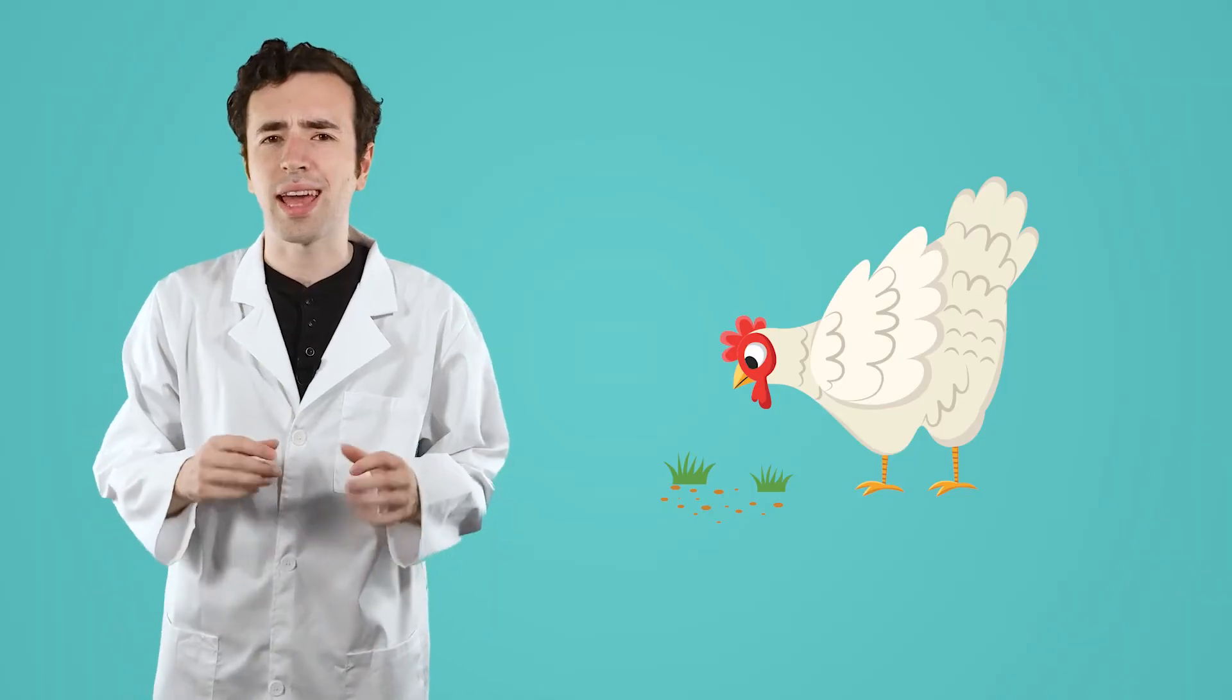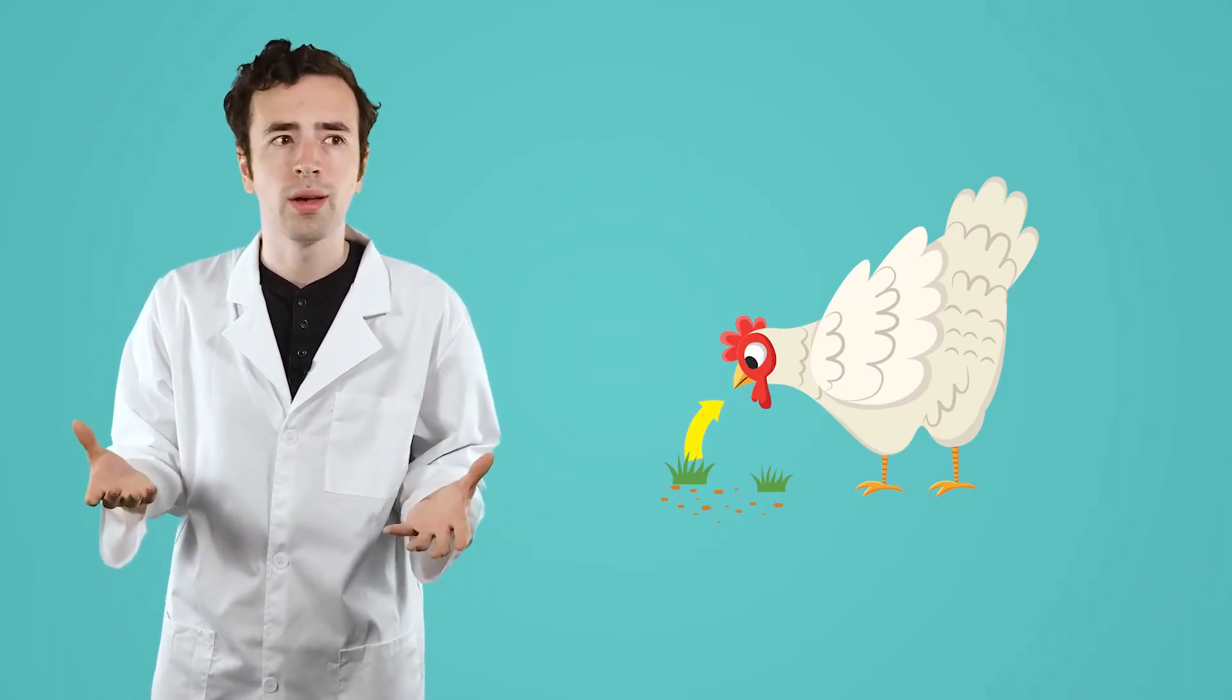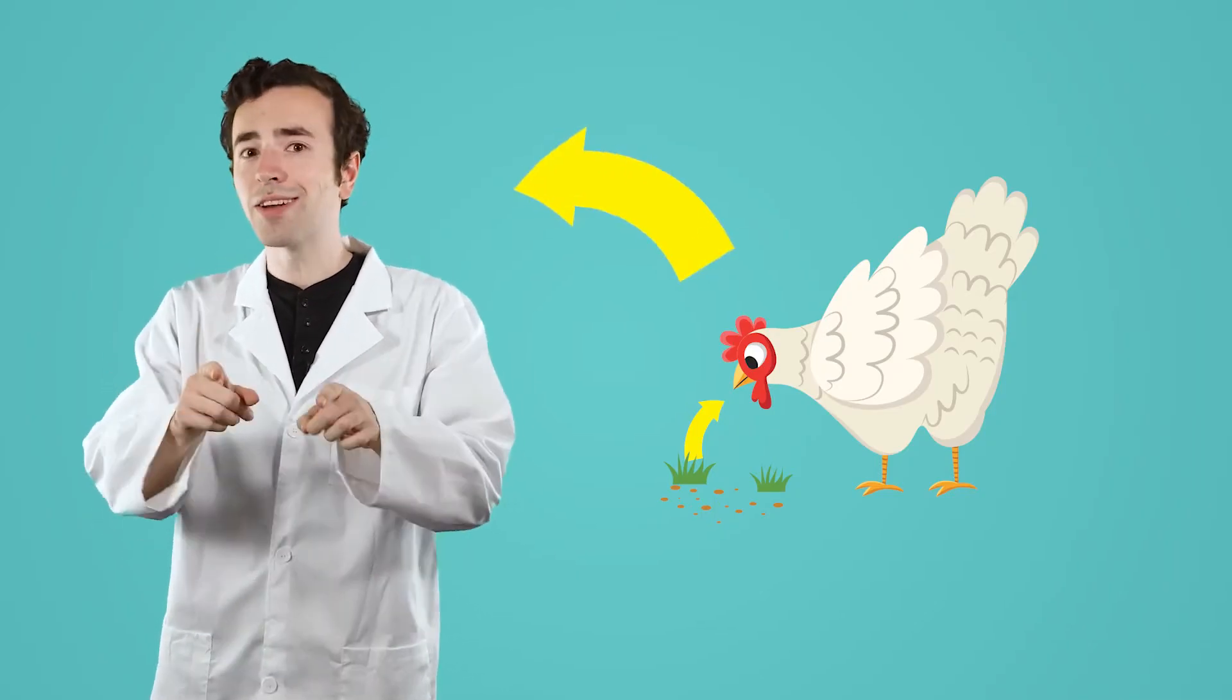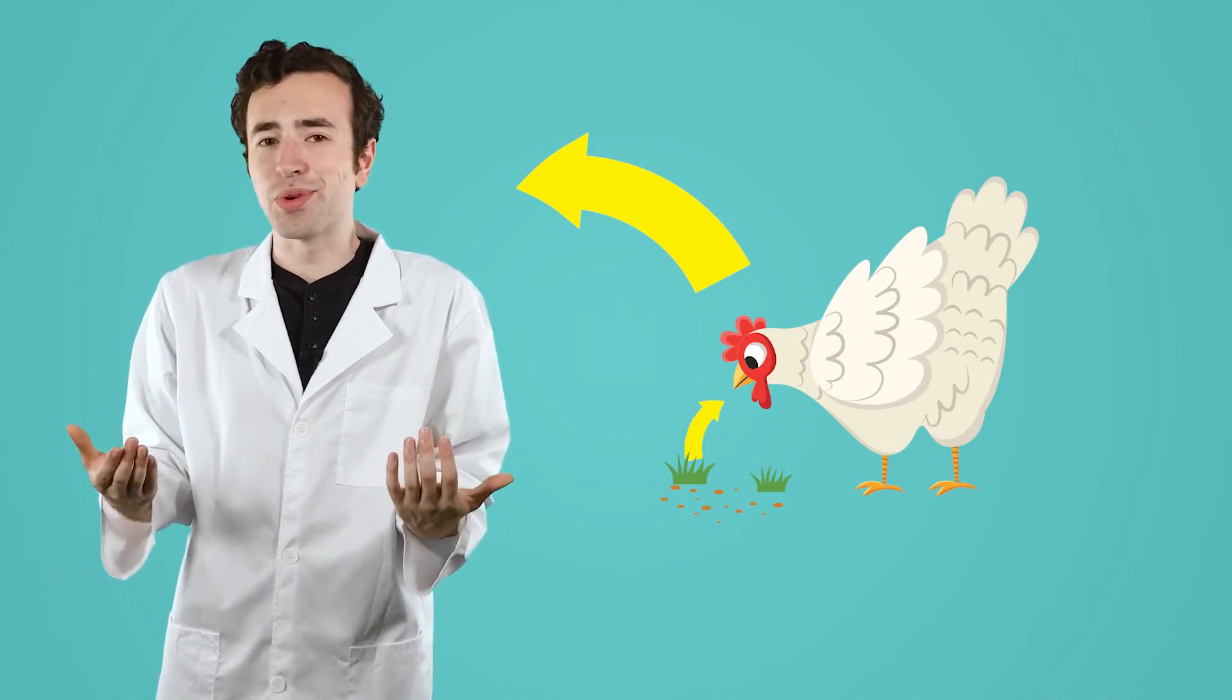So that chicken got its energy by consuming plants like grass and clover, and maybe even some insects or earthworms. That energy passed to me once I ate the sandwich, making me a consumer too.